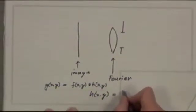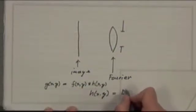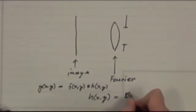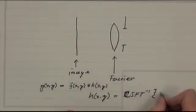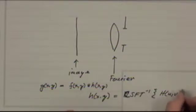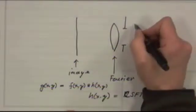And the point spread function here, h of x, y, will be equal to the inverse Fourier transform, continuous space Fourier transform of h of u, v, where h of u, v is this aperture.